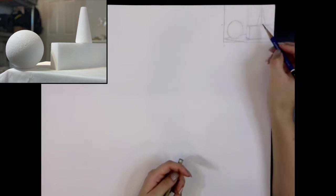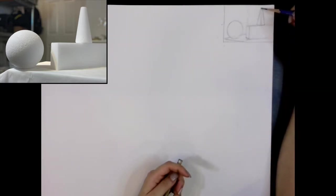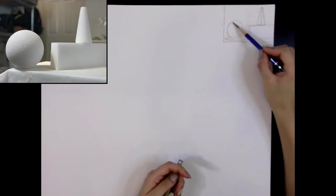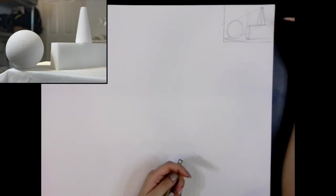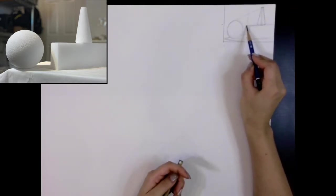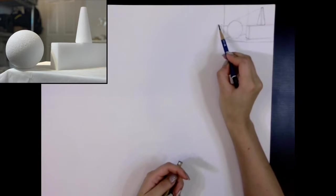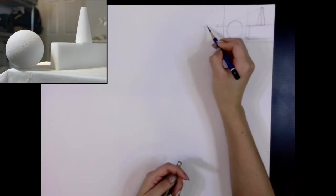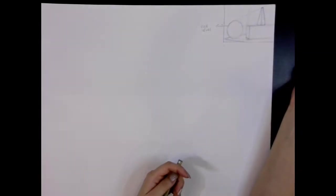When you introduce symmetrical objects like the cone, try to draw the line of symmetry which is also the axis of the form. In your thumbnail, it's helpful if you identify the eye level. The eye level is where your eyes are sitting in relation to your drawing.